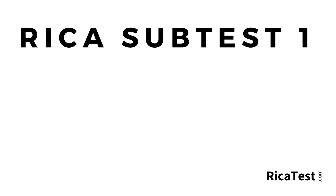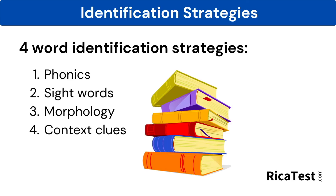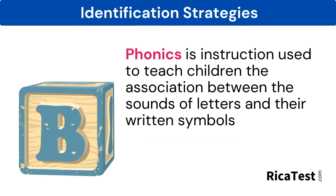Welcome to RECA Subtest 1 Online Test Preparation Course presented by RECATest.com. Children can build up to reaching automaticity using four word identification strategies. These include phonics, sight words, morphology, and context clues.